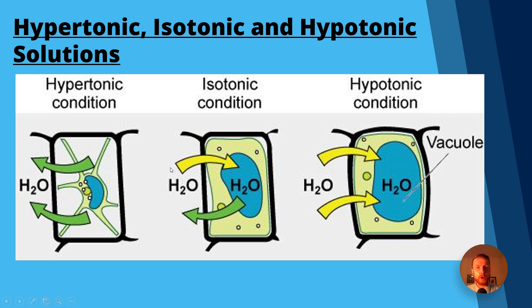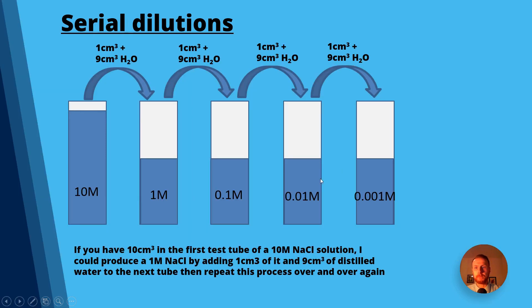So there will be no net gain in water by the cell. If they're in a hypotonic solution, water will enter the cell causing it to swell, become turgid and gain mass.